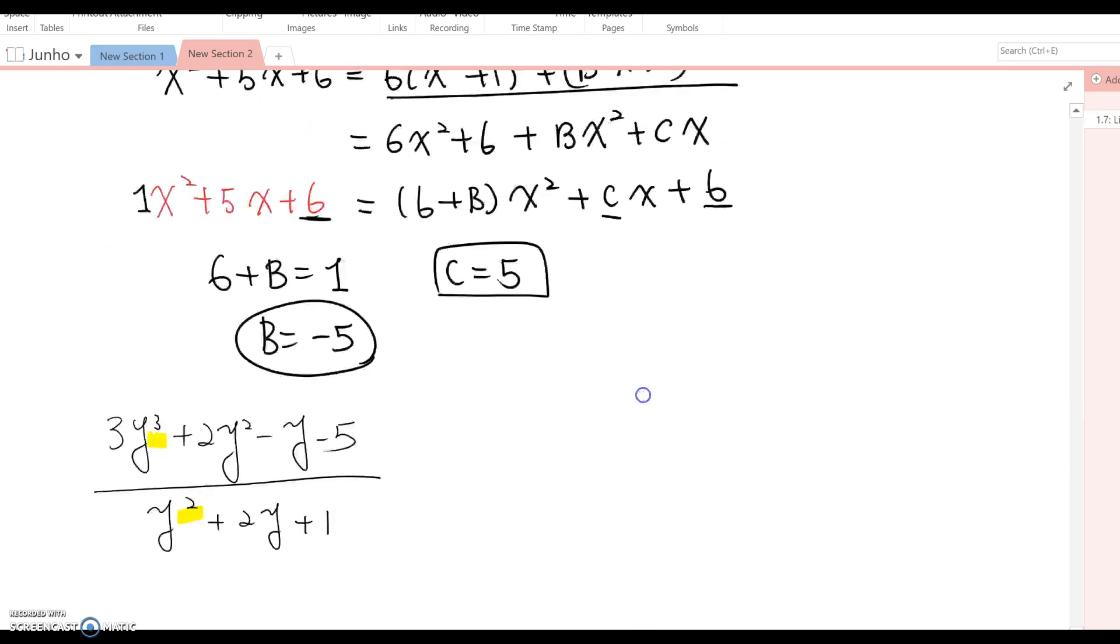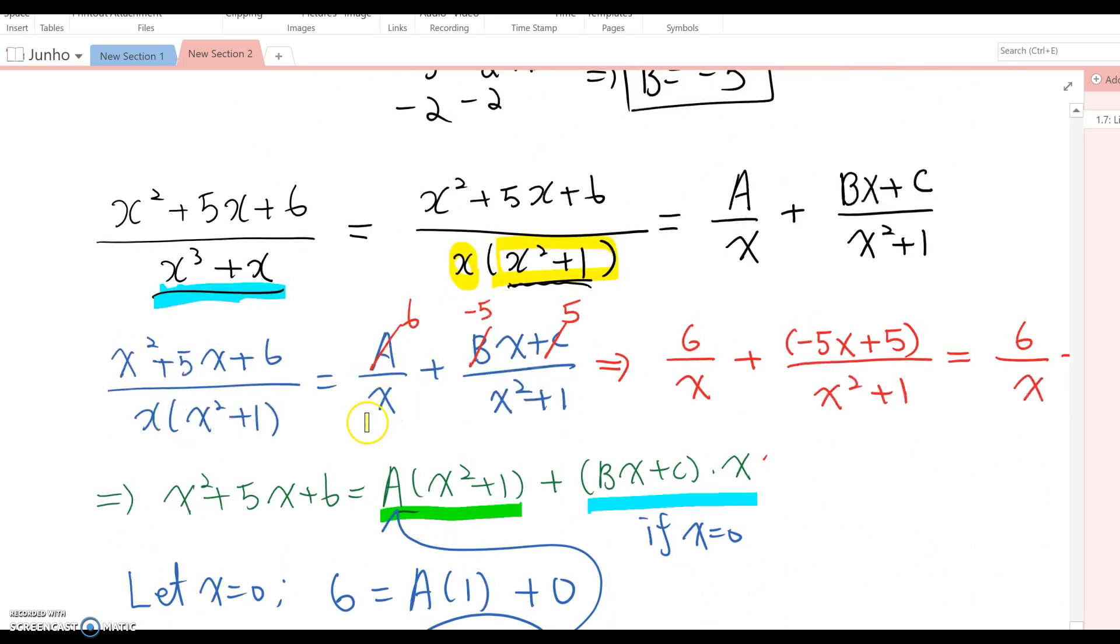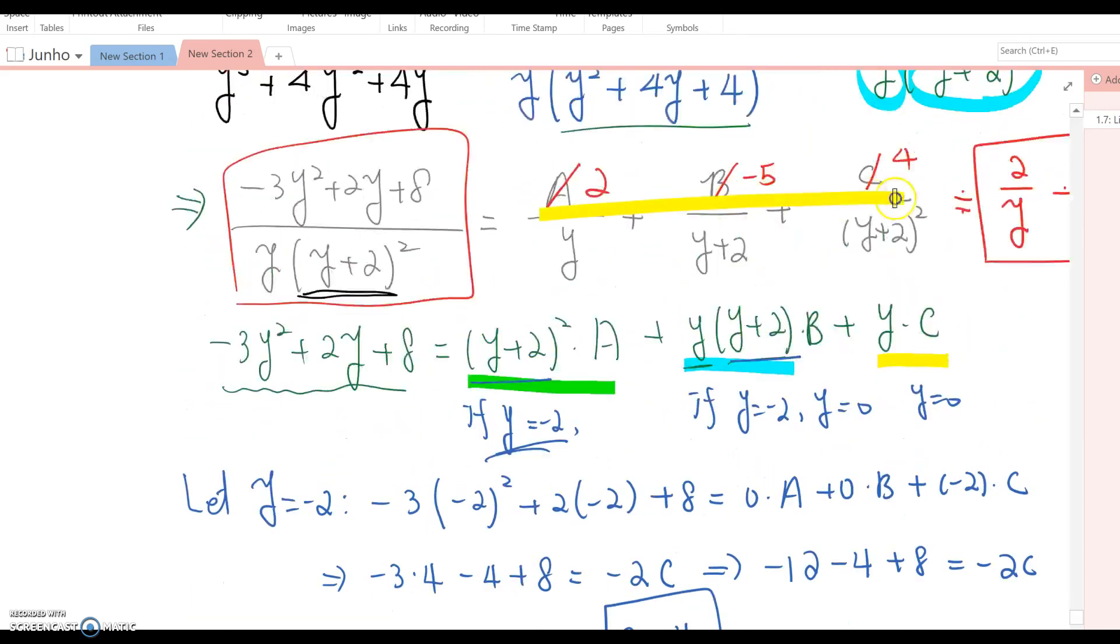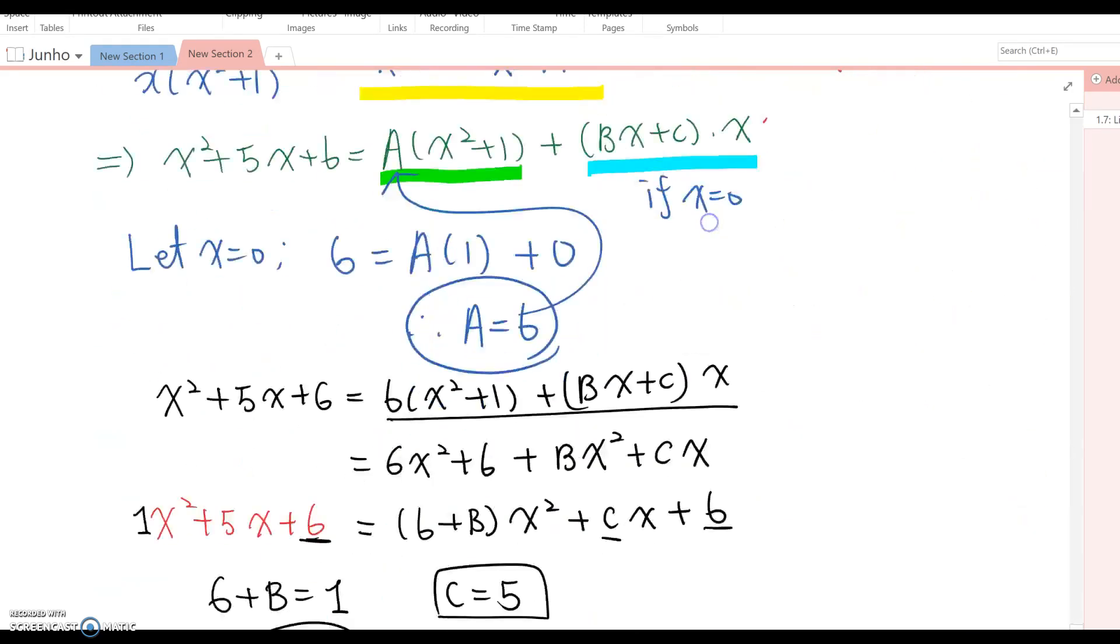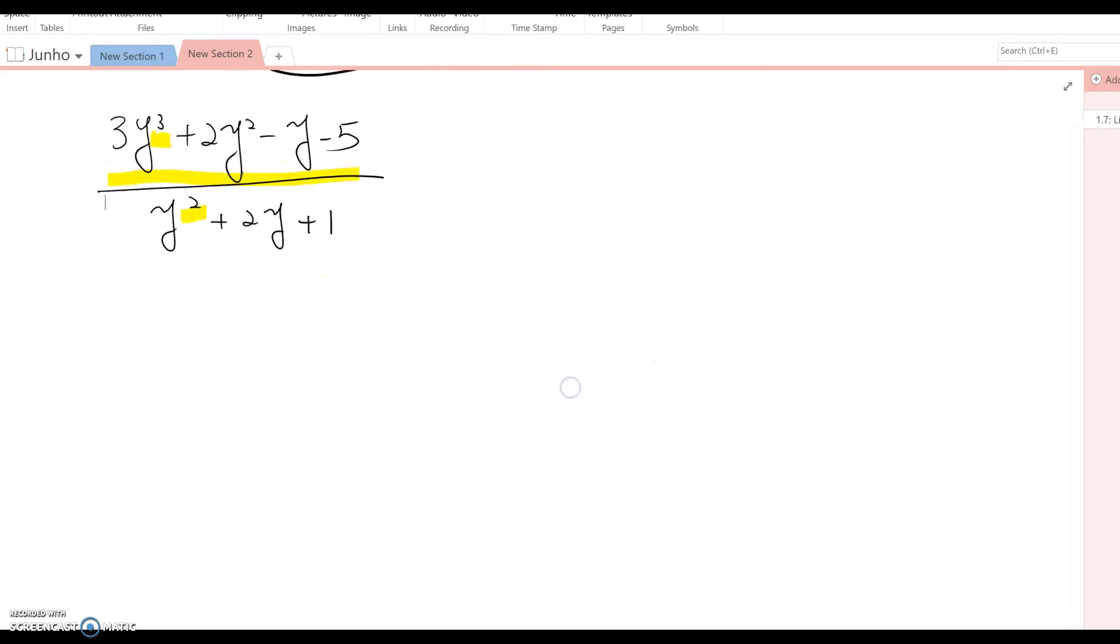Before we set up partial fractions like in previous questions, we need to perform division so the numerator's degree is smaller than the denominator's. The most well-known method is long division. We'll find the quotient and then decompose the remaining remainder part as a partial fraction.